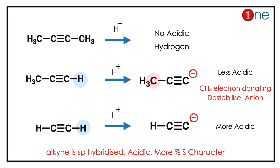P is not very acidic, so it will be the least acidic. Looking at Q and R: Q will form an anion, but that anion is destabilized by the electron-donating CH3 group. The CH3 group pushes electrons and destabilizes the anion. However, acetylene (R) has no such electron-donating group destabilizing its anion.